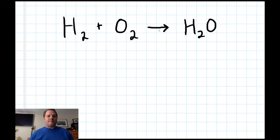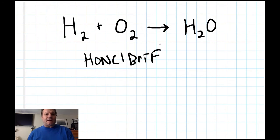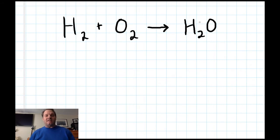So here's the chemical reaction. We have hydrogen reacting with oxygen. Both are diatomic because of Honkelbrif. Yes, Honkelbrif: hydrogen, oxygen, nitrogen, chlorine, bromine, iodine, and fluorine are all diatomic. Anyway, these are forming water. So we would read this as hydrogen reacts with oxygen to form or to yield water, H2O, dihydrogen monoxide.